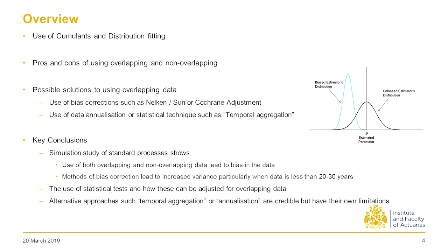The key conclusions in summary: distribution fitting using cumulants is widely used in the industry. Many use method of moments or cumulants, then convert to fit data. We believe maximum likelihood estimation is a better approach, though some within the working party believe method of moments is superior for certain distributions. The key pros of overlapping data are more data points and stability of calibration. Non-overlapping data is IID, so standard statistical tests are valid, but there is a window selection problem.